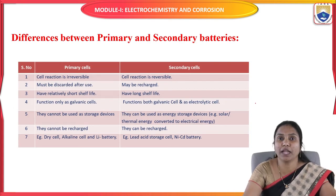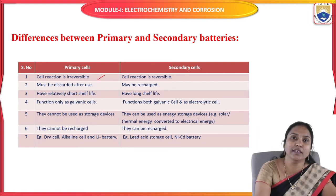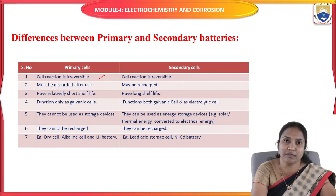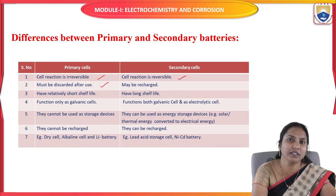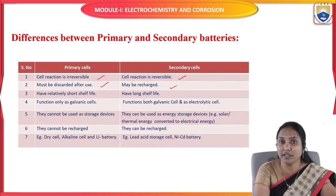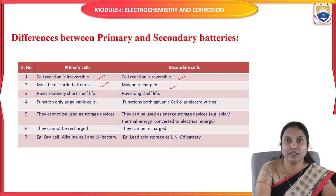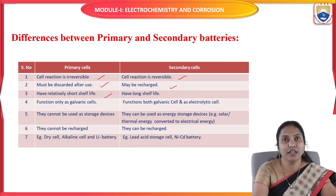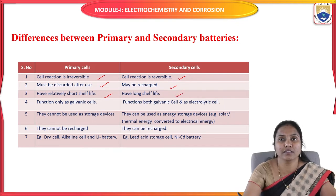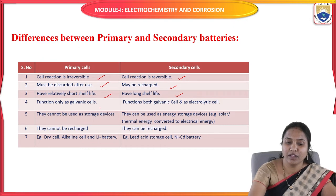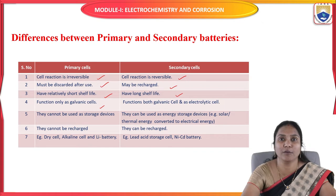Now let us discuss the difference between primary batteries and secondary batteries. In primary batteries, the cell reactions are irreversible and the battery must be discarded after use — once it becomes dead, it cannot be reused. Secondary batteries are rechargeable and may be used through a large number of charging and discharging cycles.